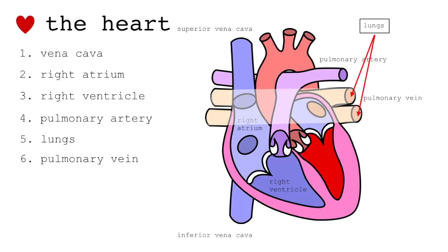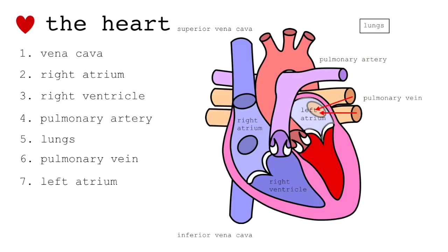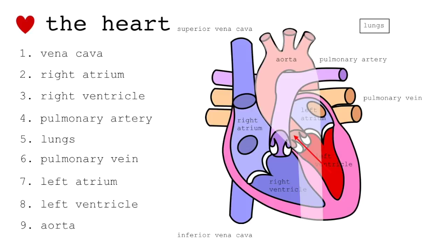And then the lungs oxygenate the blood — that's why the blood is red now, symbolizing oxygenated blood. Then it goes through the pulmonary veins. Pulmonary meaning lungs, and veins carry blood towards the heart. Through the pulmonary vein, it goes to the left atrium, to the left ventricle, and through the aorta. The aorta pumps oxygenated blood throughout the rest of the body, and that's how the other cells in the body receive oxygen and provide CO2. The cells then deoxygenate the blood, which comes back to the vena cava.